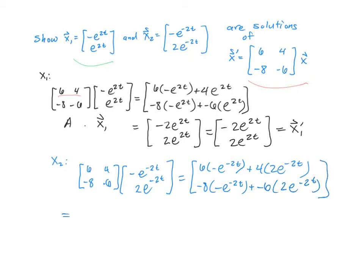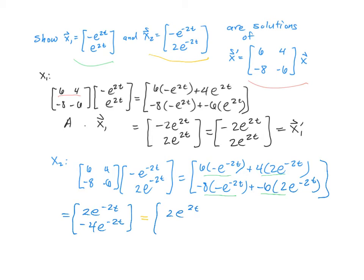We'll multiply and combine like terms. We have negative 6 of the first and 8 of the second, making positive 2 of those — so 2 e to the negative 2t. For the bottom row, we have positive 8 minus 12, which is negative 4, giving negative 4 e to the negative 2t. Looking at x2 and taking its derivative by the chain rule: negative times negative 2 makes positive 2 e to the negative 2t, and positive 2 times negative 2 makes negative 4 e to the negative 2t, which we recognize as x2 prime.